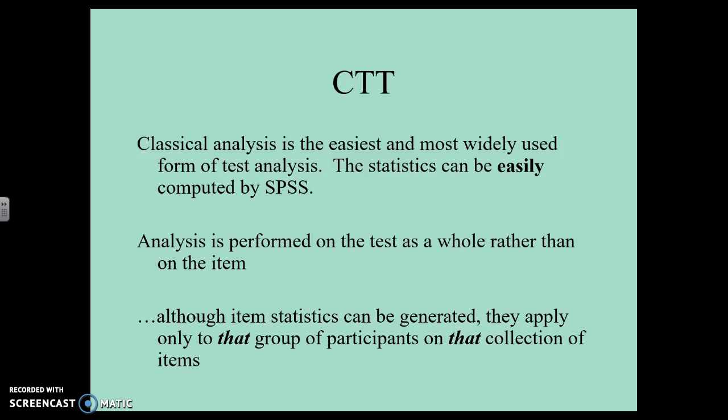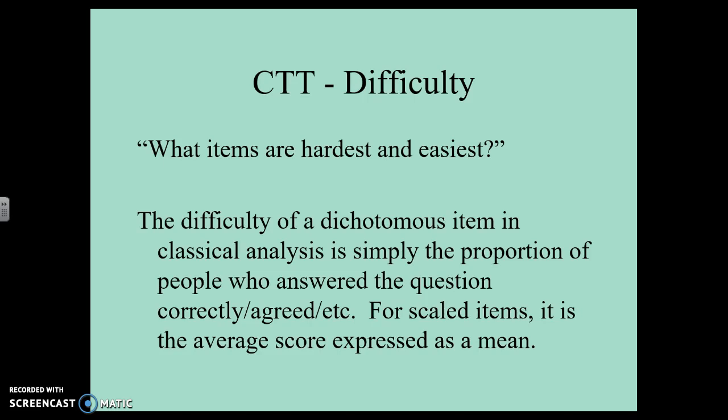CTT is the most widely used framework — we've been using it for over 100 years, and it's really easy to do with SPSS. The analysis is performed on the test as a whole; we're focusing on this anxiety level as a whole rather than individual items. Any item statistics we find are sample-specific — only applicable to that group of participants and that group of items. If we remove an item, everything can completely change. With CTT, item difficulty is established by how many people got it right, and if we're looking at agree-to-disagree, you decide what counts as 'right.'